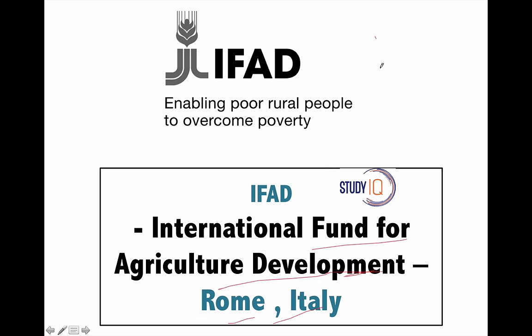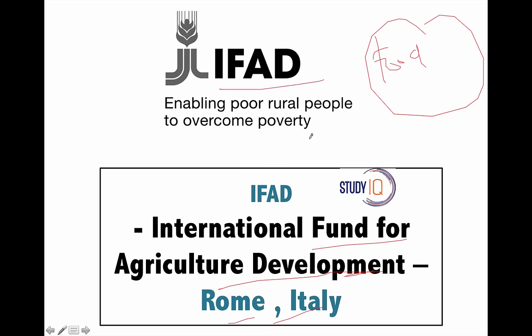Anything related to food is headquartered in Italy. For example, the World Food Programme is in Italy, the Food and Agriculture Organization is in Italy, and IFAD — the International Fund for Agricultural Development — is also in Italy.